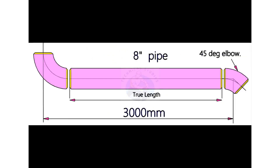Let us try another example. This piping has an 8-inch 90-degree long radius elbow and a 45-degree elbow. To calculate the take-off of a 45-degree elbow, multiply the diameter in inches by 0.4142.